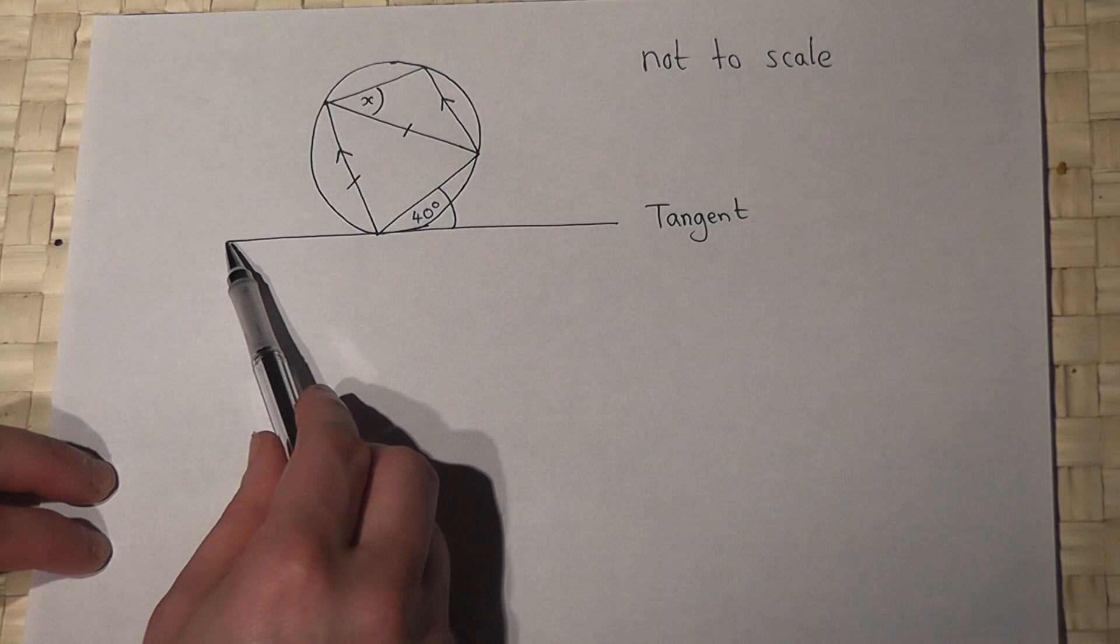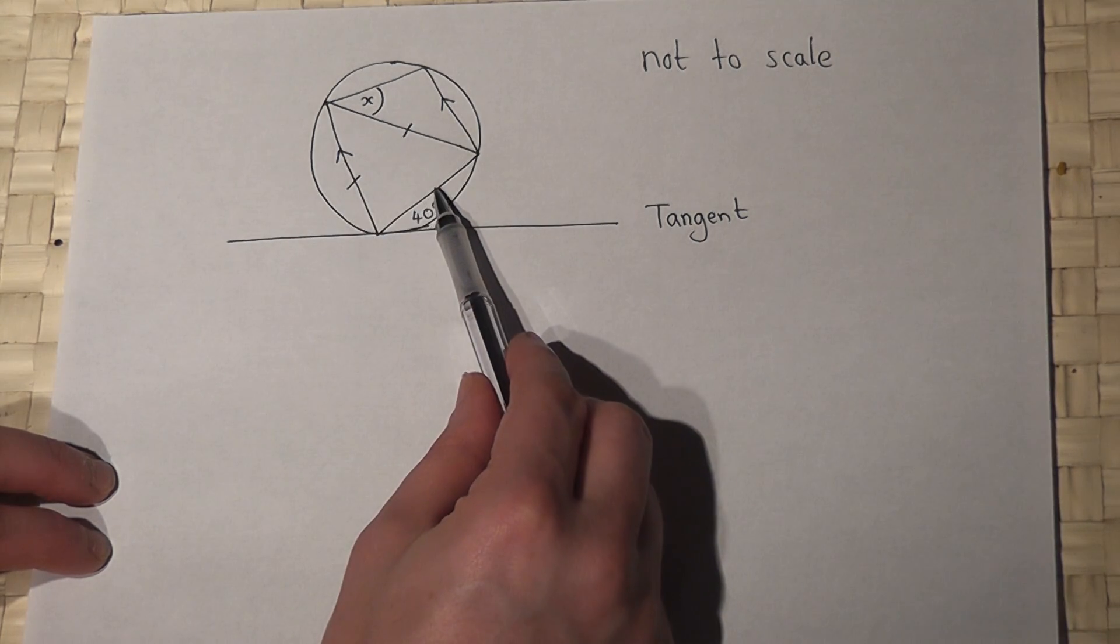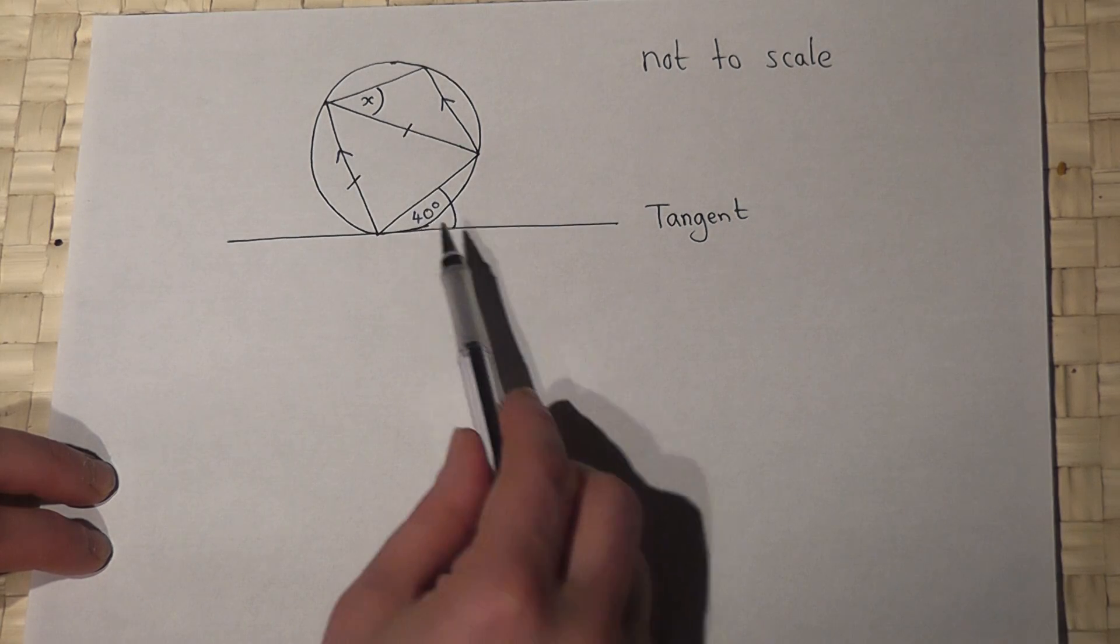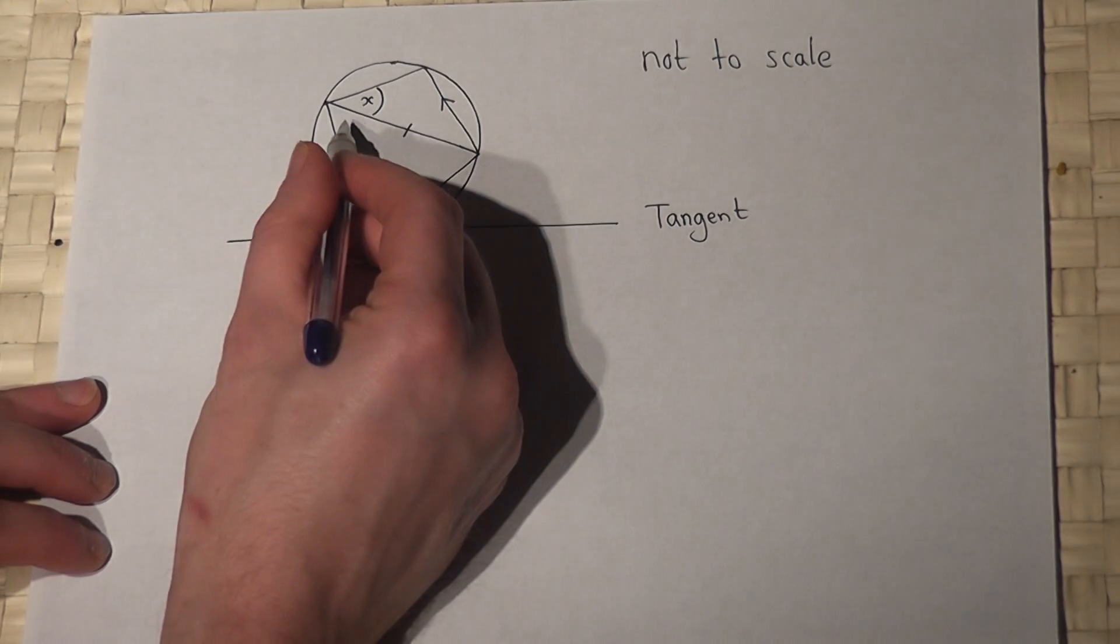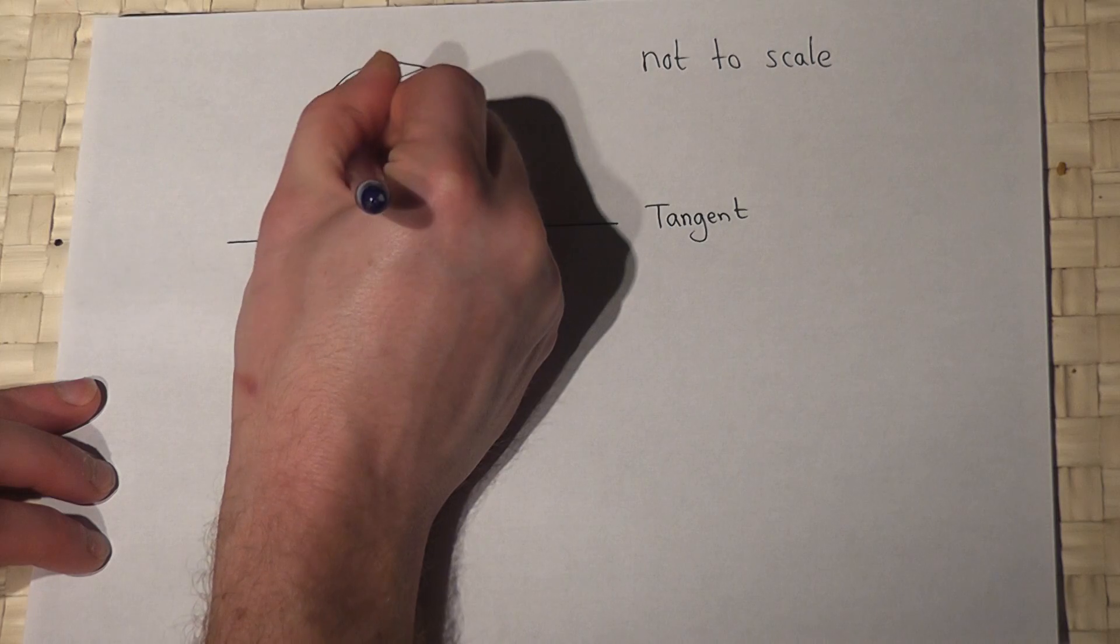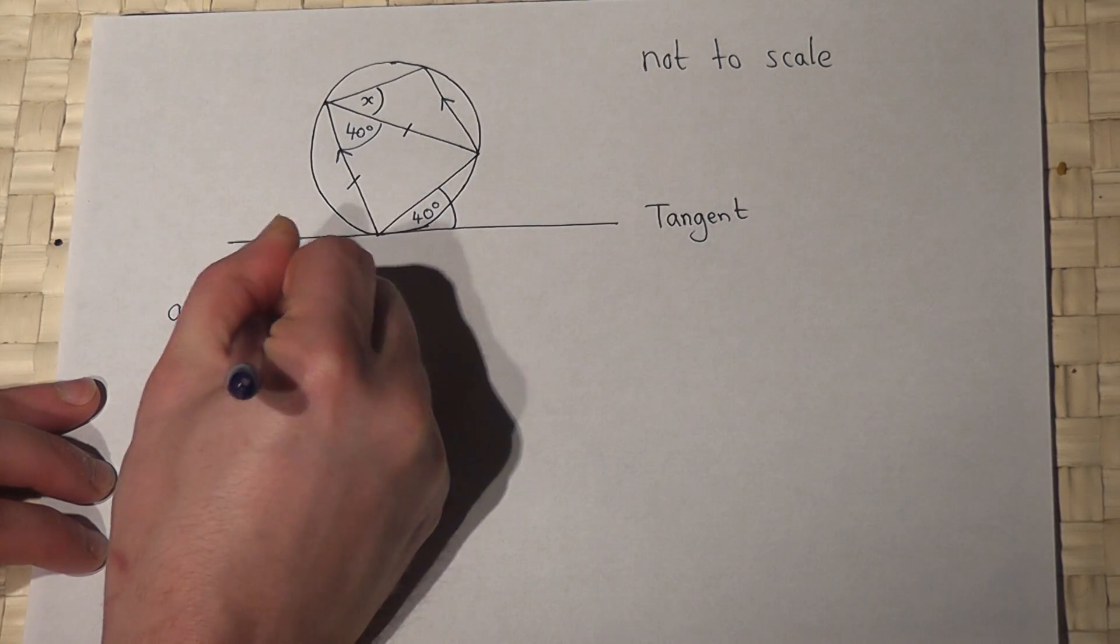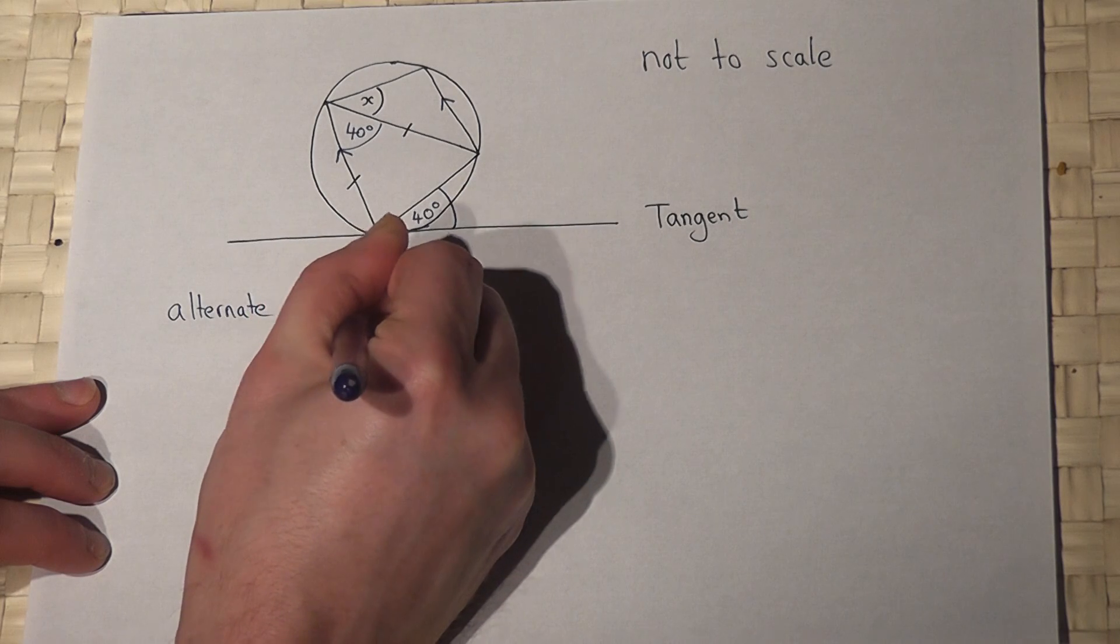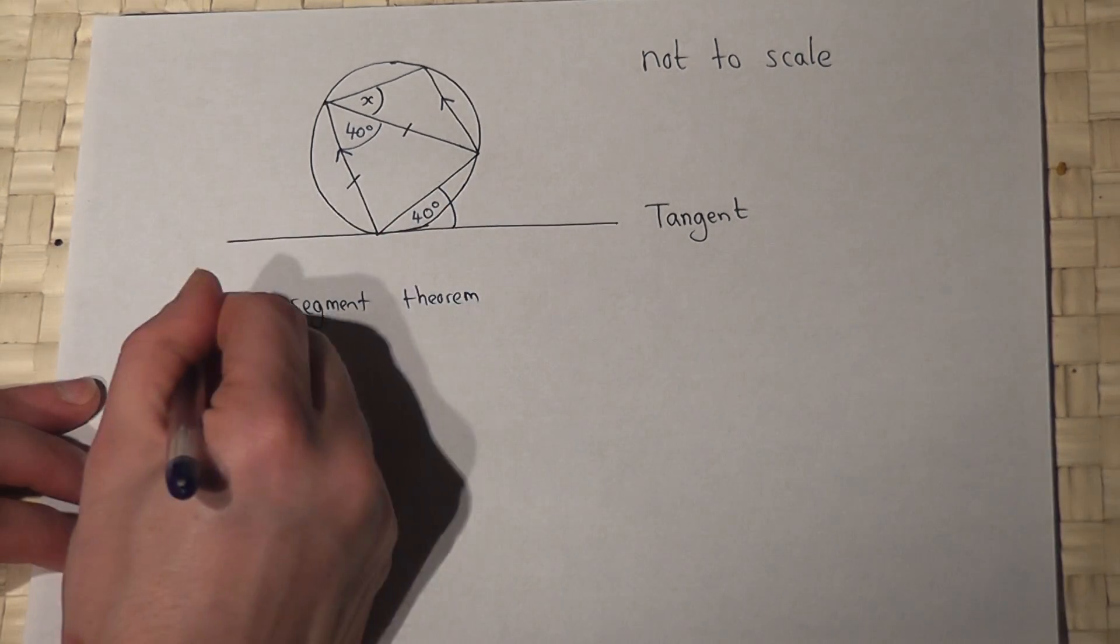If we have a tangent and a triangle, and we know this angle here is 40, then the alternate segment theorem tells us that angle there is also 40. So therefore I know that's 40 again due to the alternate segment theorem. So that's fact one we've used.